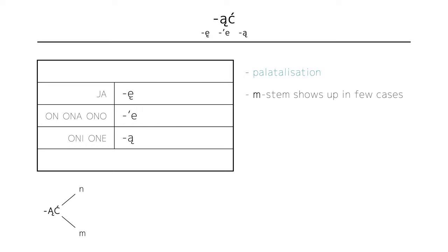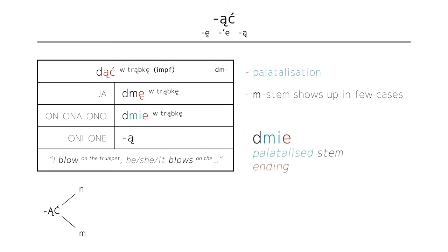Since m stem only applies rarely, let's talk about those verbs first. The verb dąć, to blow of the wind, or to play a wind instrument, like a trąbka, a trumpet, has a stem in dm, giving us dmę w trąbkę, I blow on the trumpet, dmie w trąbkę, he, she, it blows on the trumpet, and dmą w trąbkę, they blow on the trumpet.